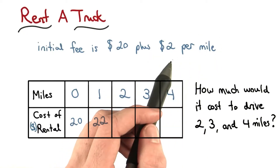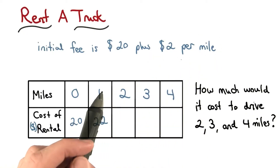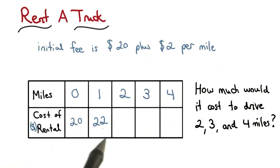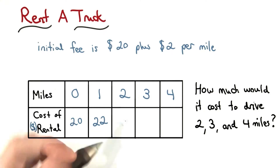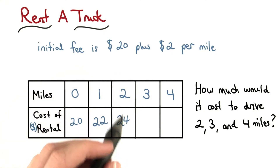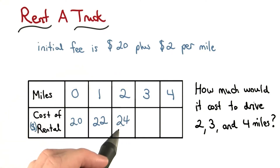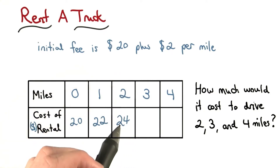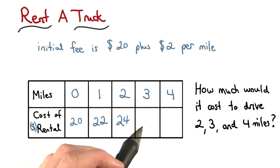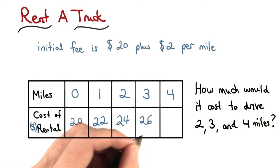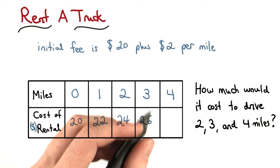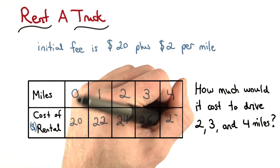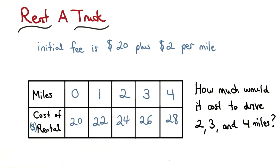I pay $2 per mile, so if I drive another mile, I pay two more dollars. So driving two miles would cost $24. And if I drive one more mile, I pay another $2. So it costs $26 to drive three miles, and $28 to drive four miles.